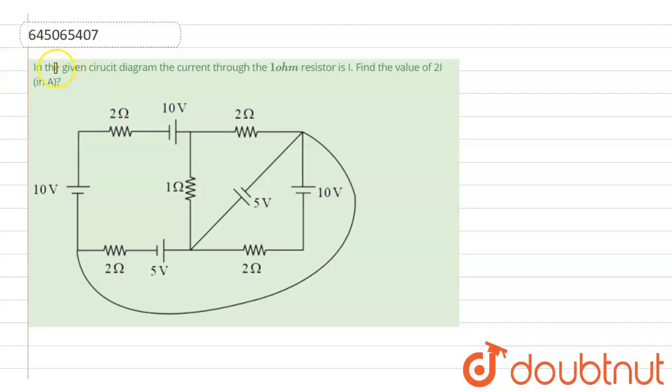Hello students, our question is: in the given circuit diagram, the current through the 1 ohm resistor is i. We have to find the value of 2i in amperes.